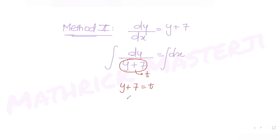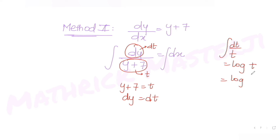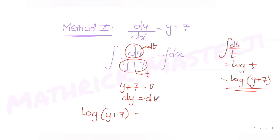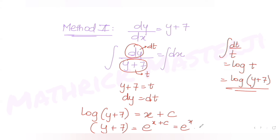To integrate, substitute t = y + 7, so dy = dt. The integral of dt/t is log(t), which resubstituting gives log(y + 7) = x + C. Removing the log, we get y + 7 = e^(x + C) = e^x · e^C.